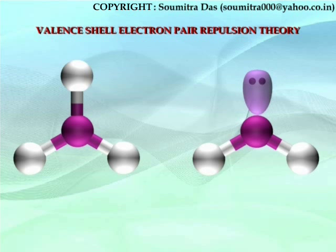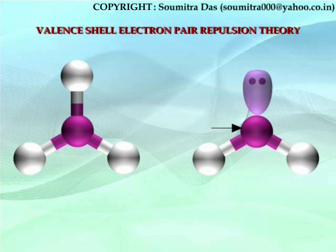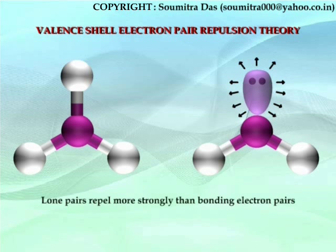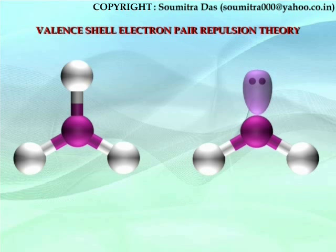Bonding electron pairs are bonded with another atom apart from the central atom. Therefore, bonding electron pairs interact with two atoms. The lone pair electrons, on the other hand, interact with one atom only. Thus, the lone pairs repel more strongly than bonding electron pairs.